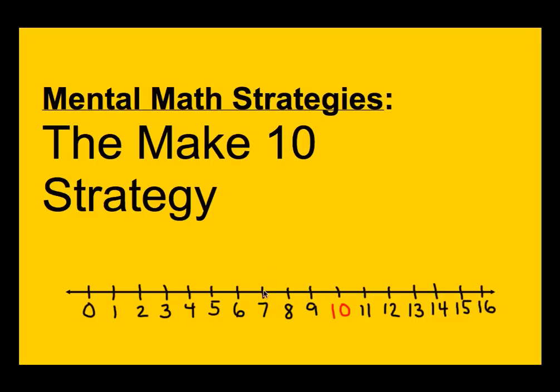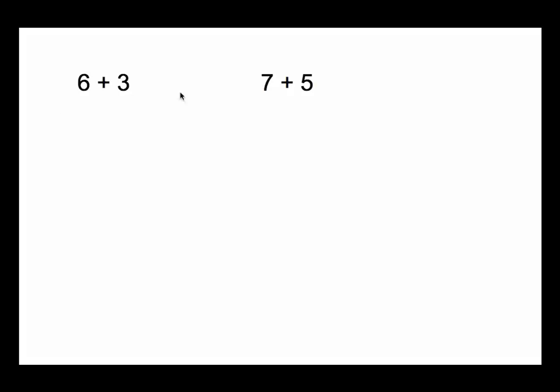The first part is to ask yourself how much does it take to make 10 with the number that I've been given. So if I start with the number 7, you're going to say 7 and what make 10? Well, 7 and 3 make 10.